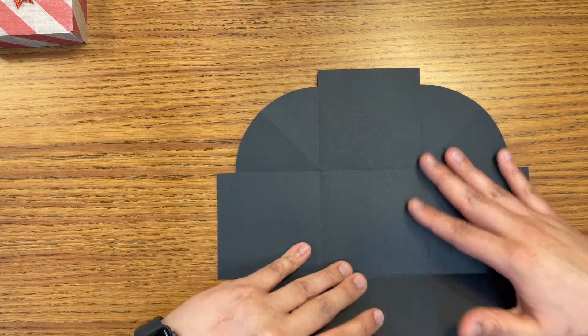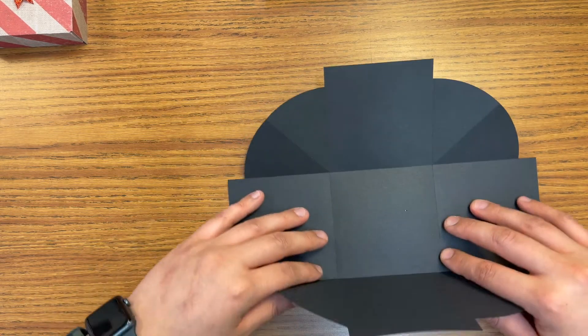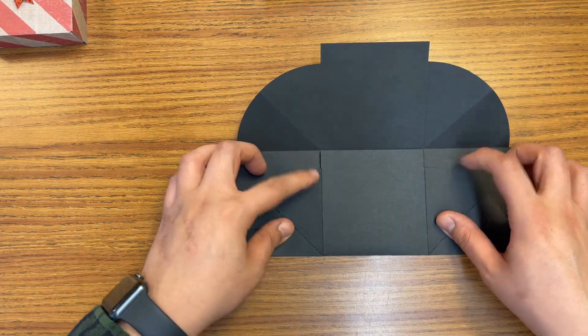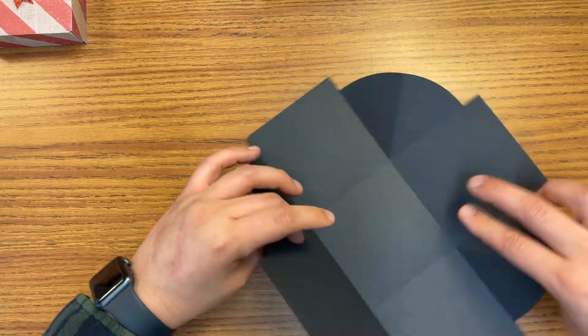To fold, you're just going to go ahead and follow those lines, bring it up and then bring this side up and then bring that up. You want to make sure it's nice and crease.